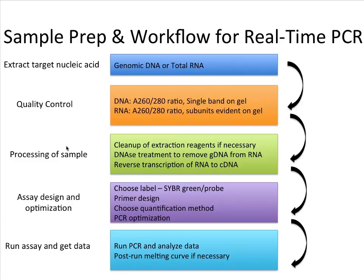For DNA and total RNA you can look at the absorbance at 260 and 280 nanometers and get the ratio of those two absorbances. That will give you an indication of the purity of the nucleic acid you're using.